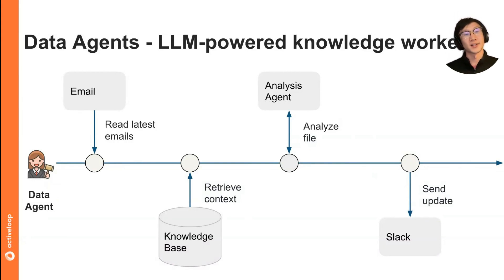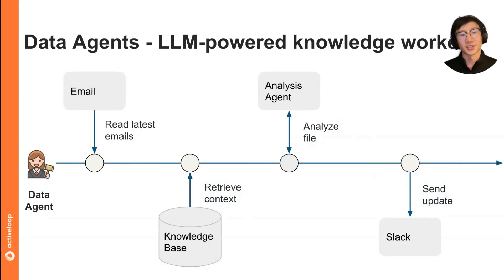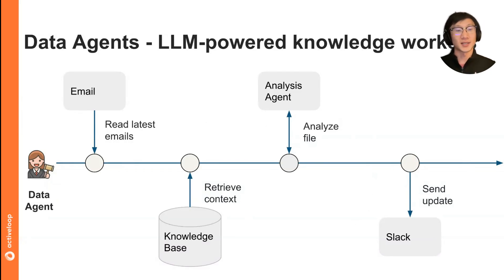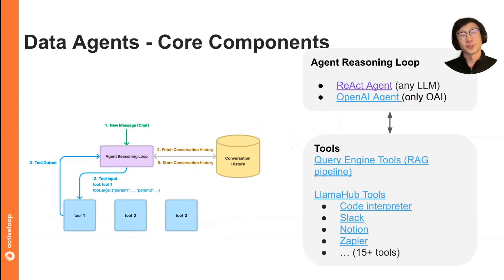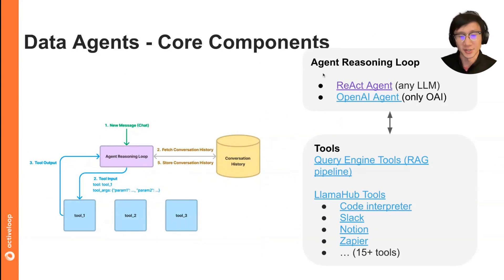It can call the email client as a tool to read the latest emails and put that in its conversation memory. It could call the RAG pipeline to return relevant context to ground those emails in additional context. And then it can call a tool to not just do search retrieval but actually modify state in the world — for instance, send an update through a Slack API.